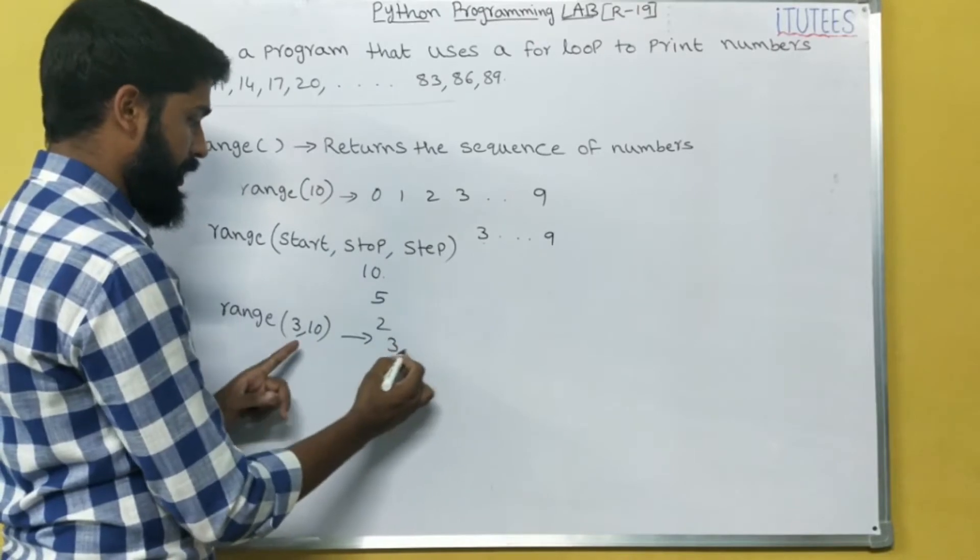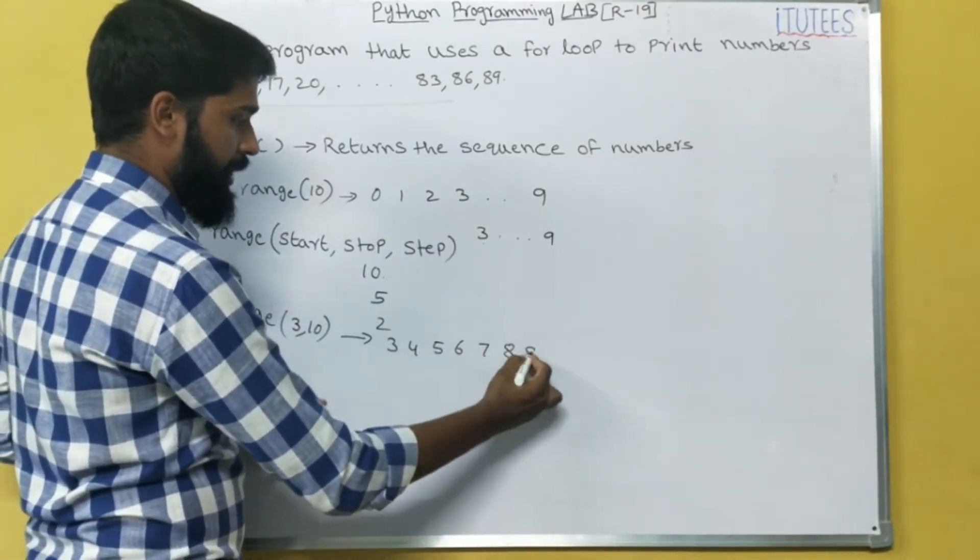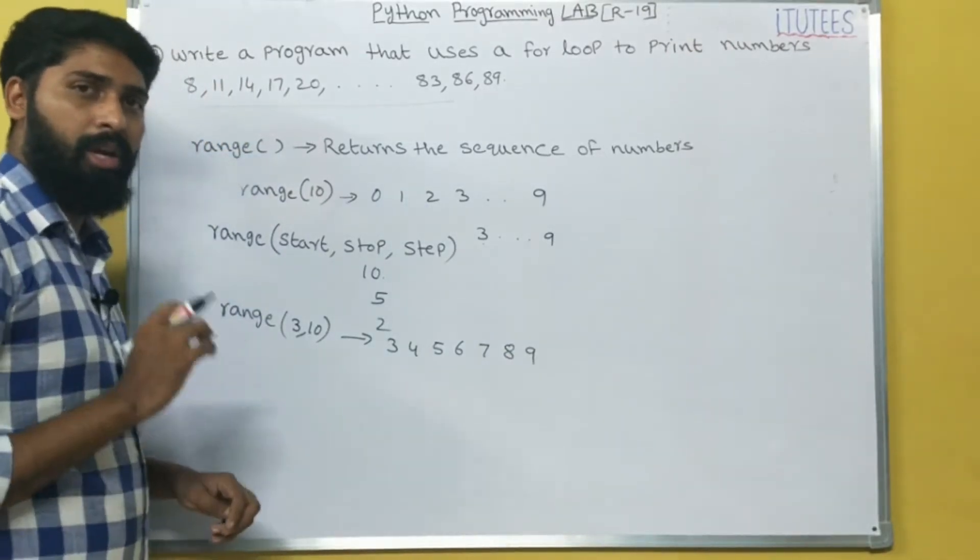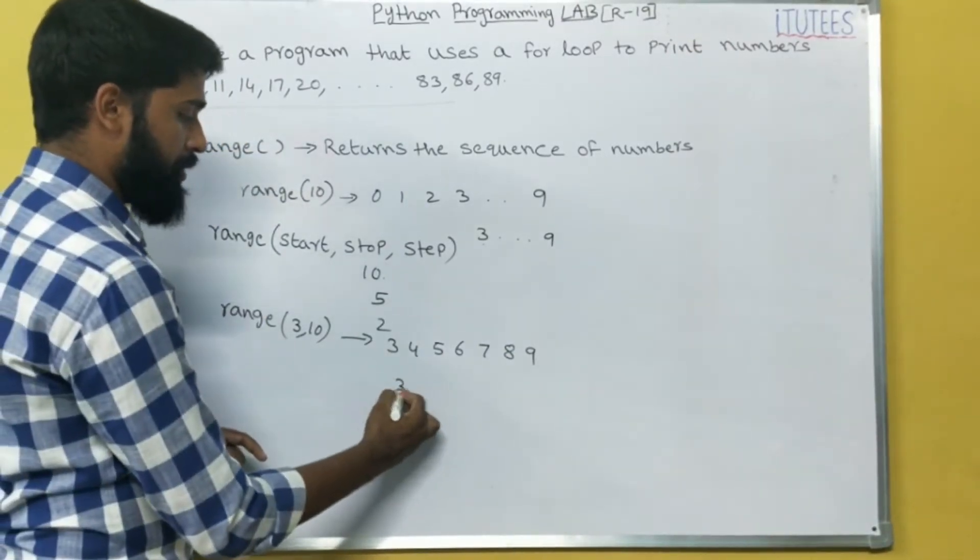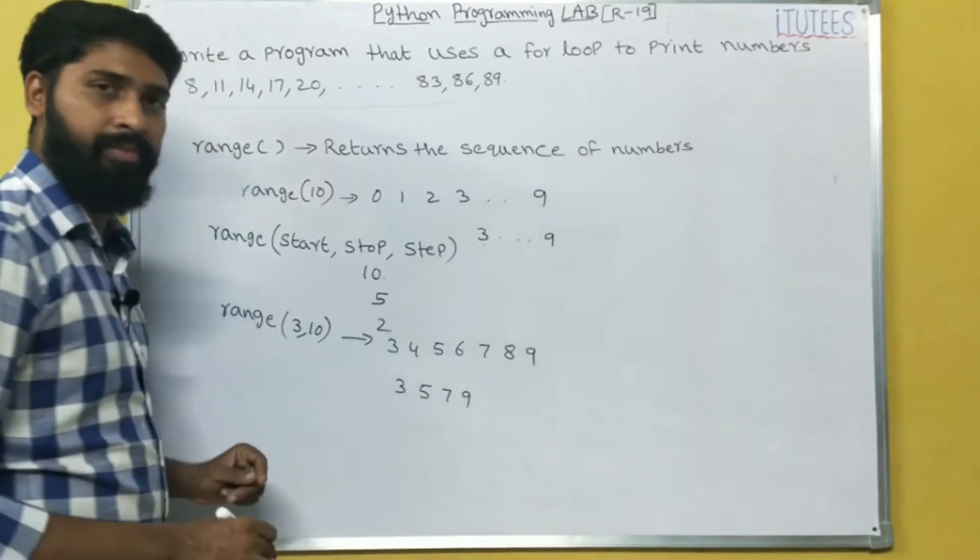So the output is 3, 4, 5, 6, 7, 8, 9. Now I want to print alternative numbers: 3, 5, 7, 9. How?